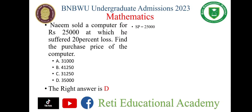Selling price is 25,000. Cost price, we have to find it. Loss is 20%. So it means that we have to find 20% of the selling price.